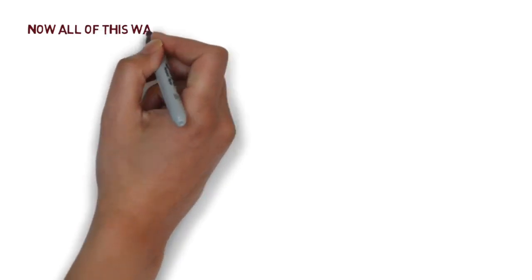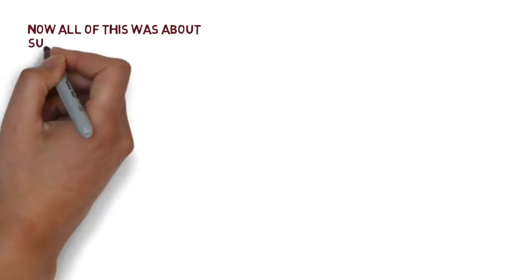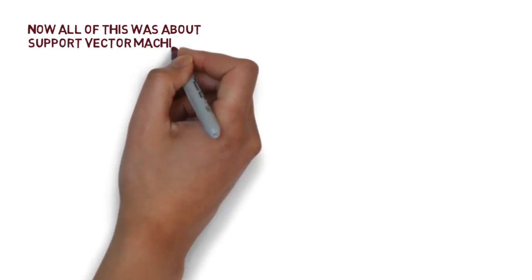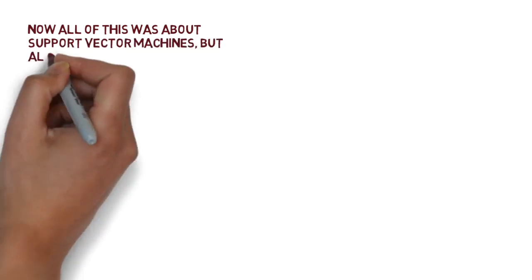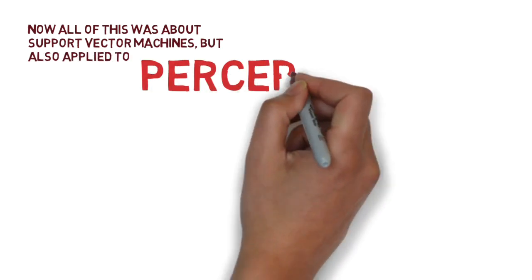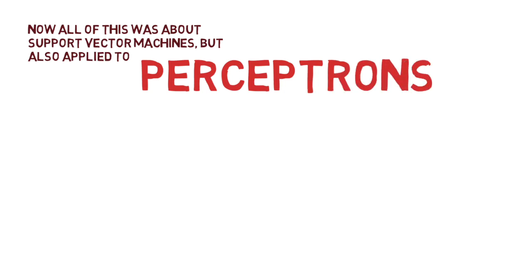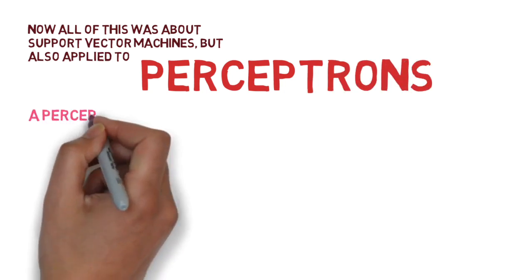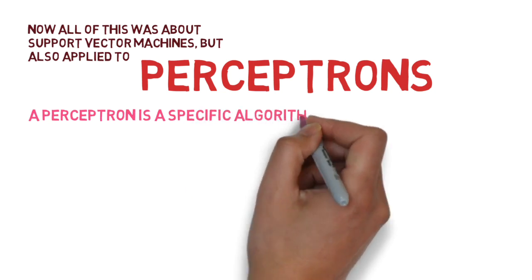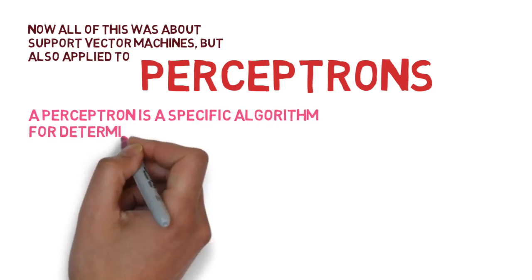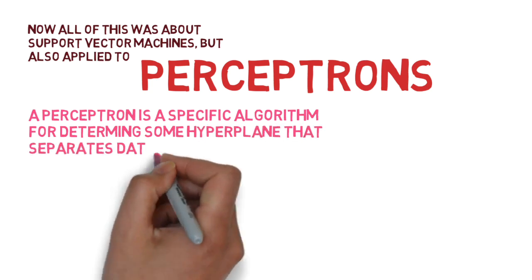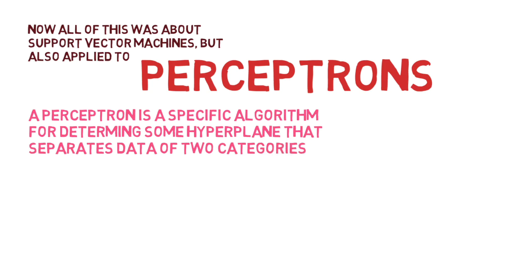You might be wondering, we had been talking about perceptrons, but we spent a lot of time now talking about support vector machines. Everything that we said about support vector machines could also be applied to perceptrons. Perceptrons, as we said, are analogous to support vector machines. It is a specific algorithm to determine some hyperplane that separates the data of these two categories.